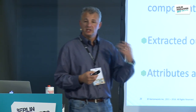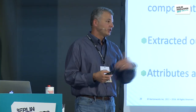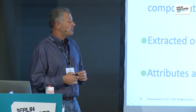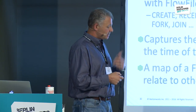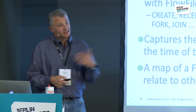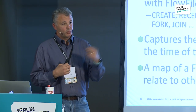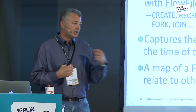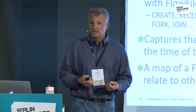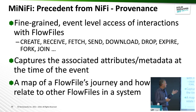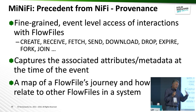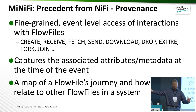The provenance information in MiNiFi is the same type of idea as in NiFi — fine-grained event-level access: when something's created, when attributes are modified, when it's viewed, downloaded, and what's done to it. Everything is recorded, along with all associated attributes and metadata. You can end up with a map of a flow file's journey from a device where data originated all the way back to NiFi in a data center — a whole life cycle of what happened to this piece of data.